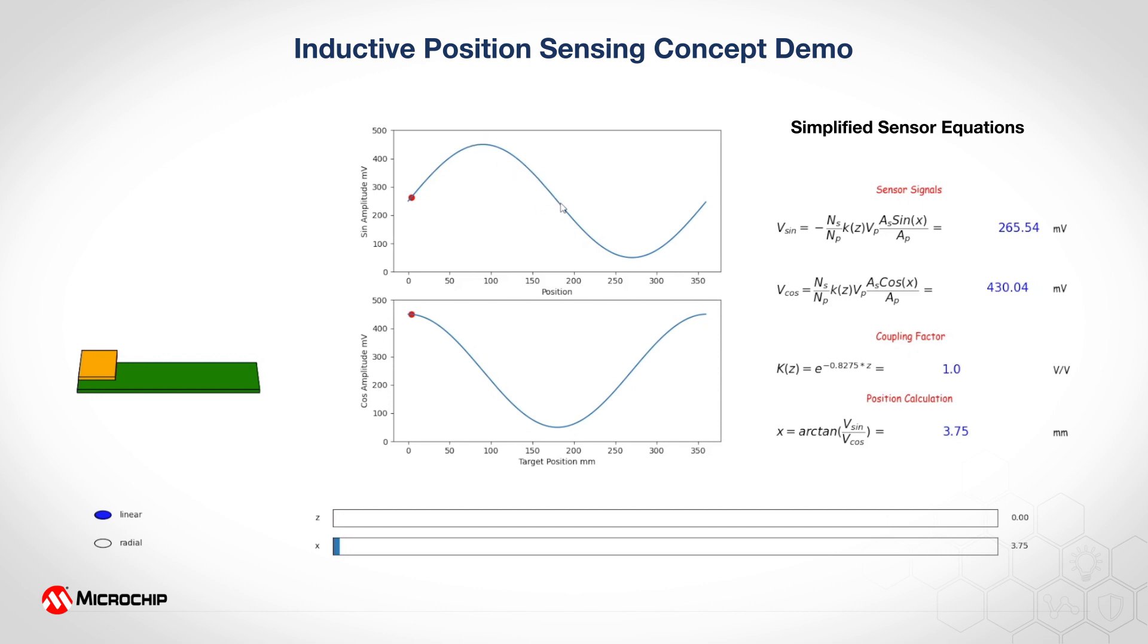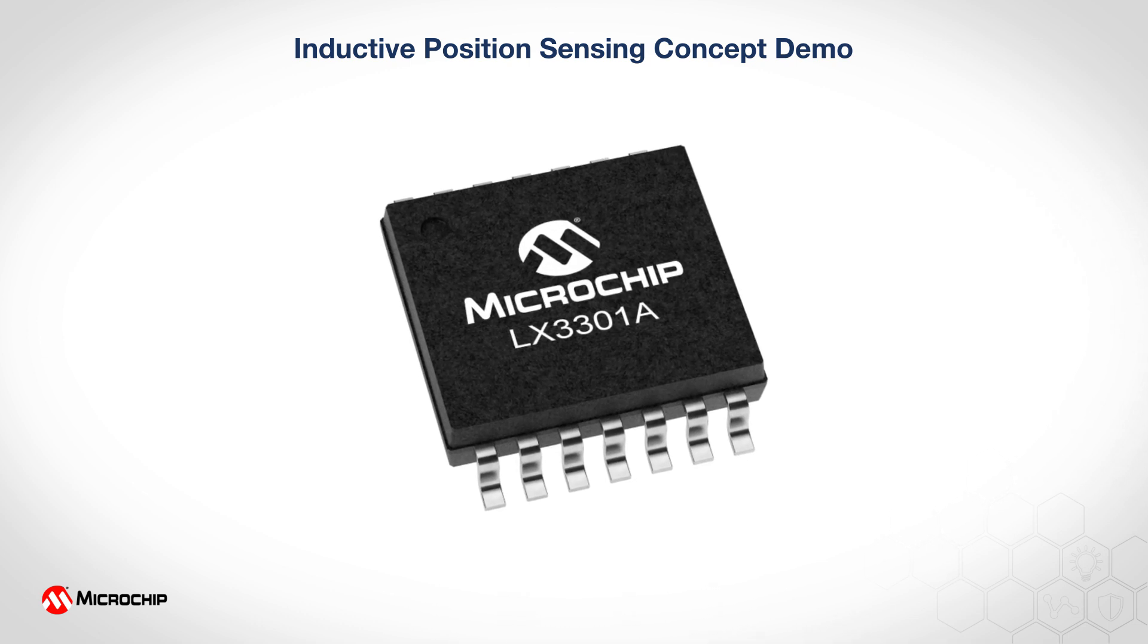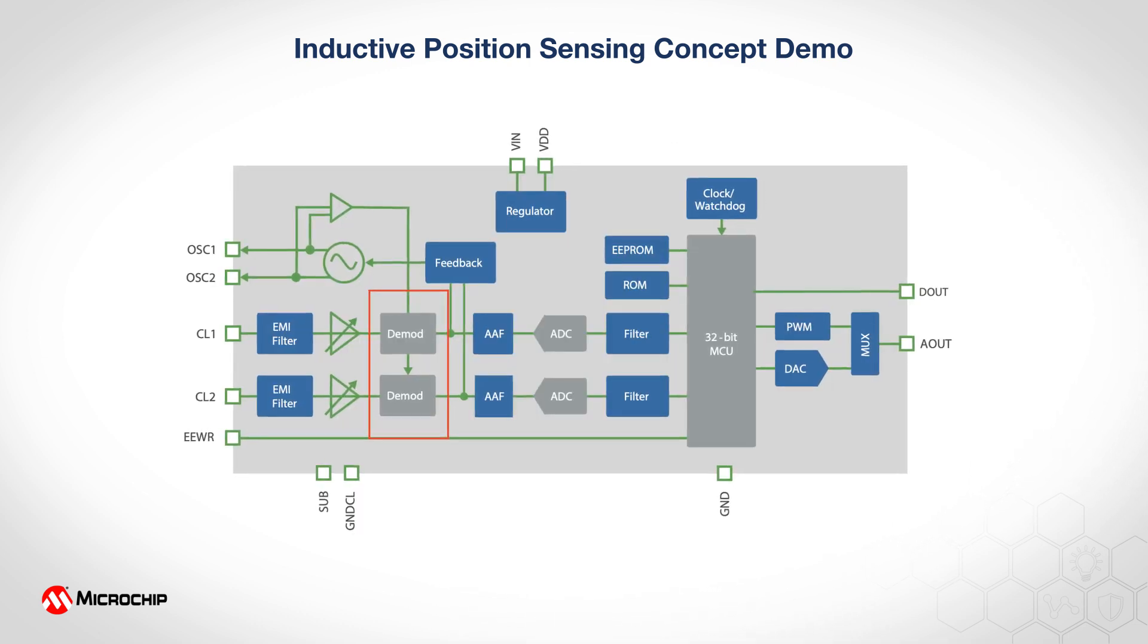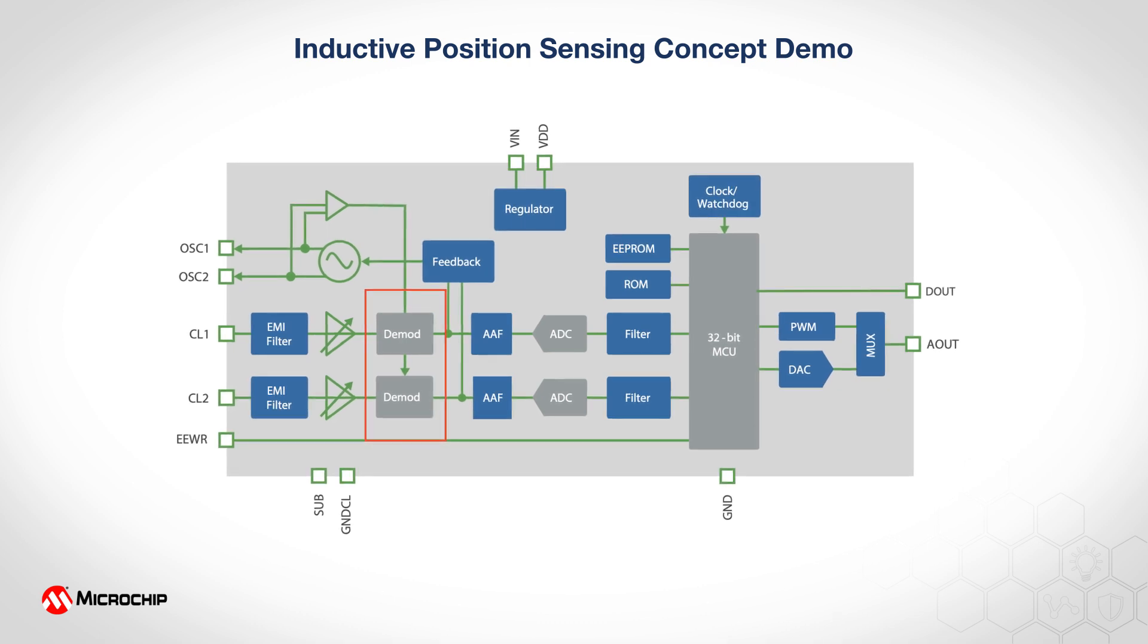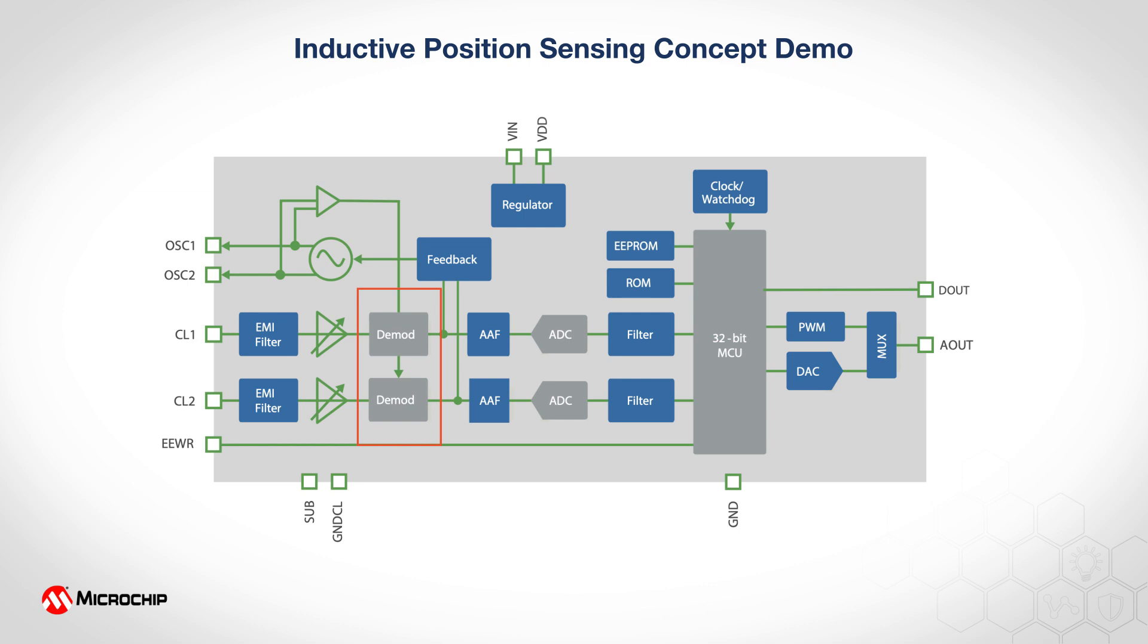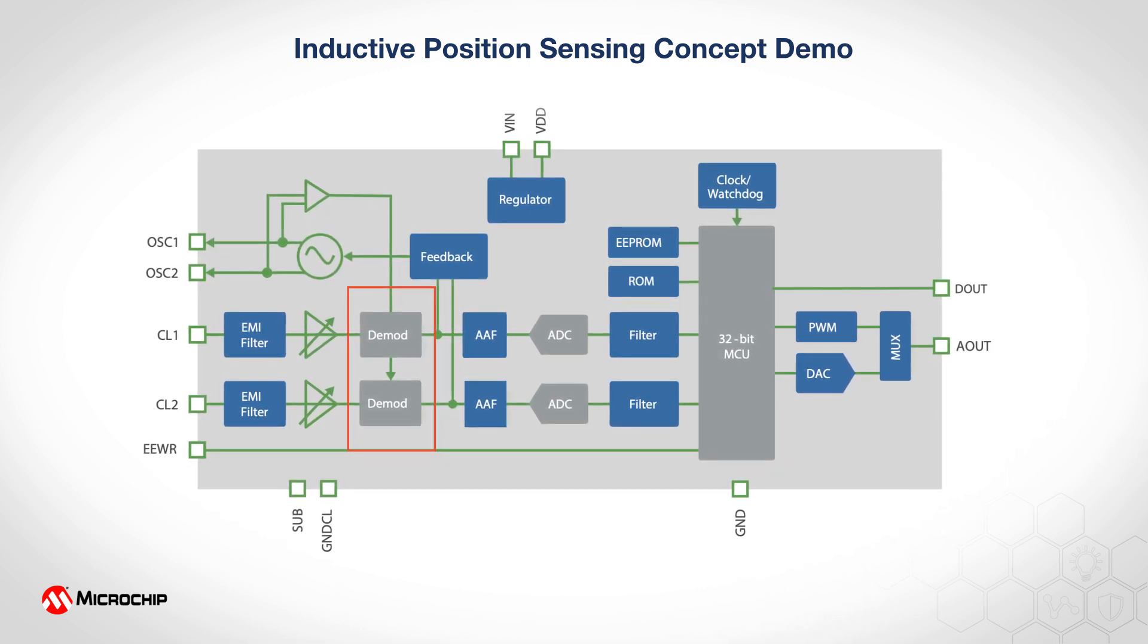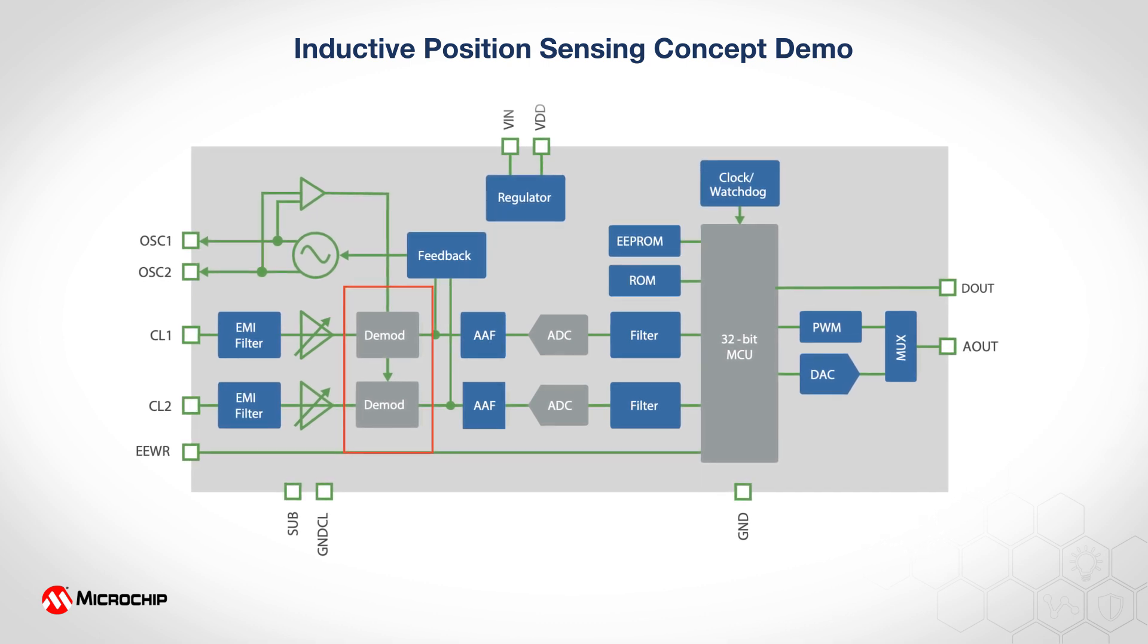In the sensor IC such as the LX3301 or 3302, we have a demodulator tool so that we'll be able to peak detect the amplitude of this transformer oscillation output. So this is essentially amplitude modulated signal and we use that signal to calculate the position of the metal target.